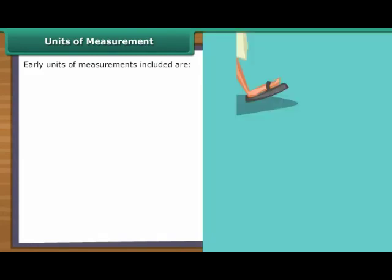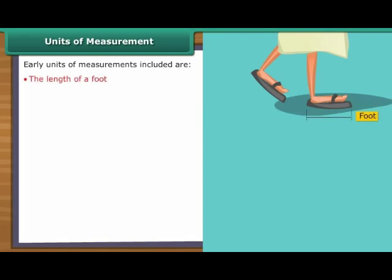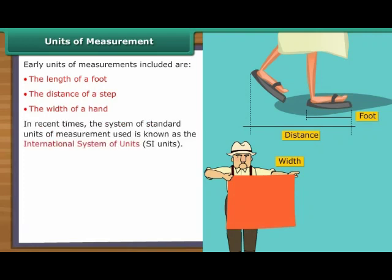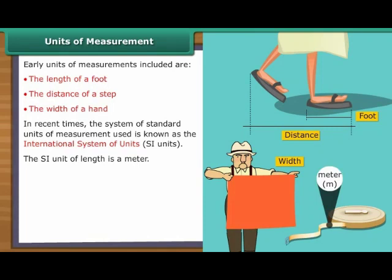Units of Measurement. In the early days, units of measurements included the length of a foot, the distance of a step, and the width of a hand. However, these were difficult to maintain as the length of a foot would vary from person to person. To standardize the units, a metric system was put in place. This system is a standard unit of measurement and the system of standard units of measurement used now is known as the International System of Units or SI Units. The SI unit of length is a metre.